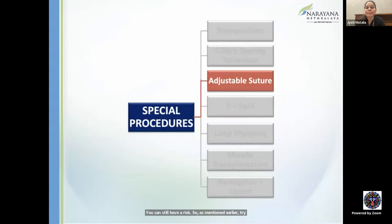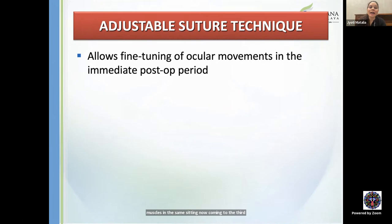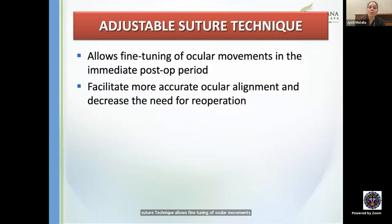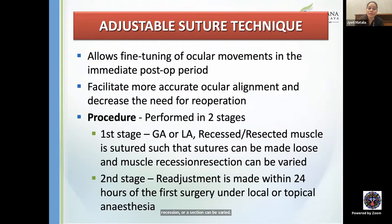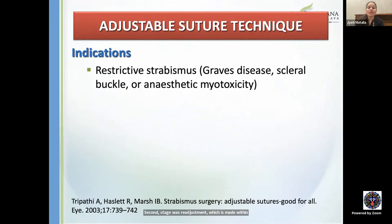Adjustable suture technique allows fine-tuning of ocular movements in the immediate post-operative period, facilitates more accurate alignment, and decreases re-operation rates. It is performed in two stages: the first stage under GA or LA where recession/resection sutures are placed in an adjustable fashion; the second stage readjustment within 24 hours under local or topical anesthesia. Indications include restrictive strabismus (Graves' disease, scleral buckle, anesthetic myotoxicity), cases with previous trauma or surgery, incomitant deviations (Duane's, Möbius syndrome, myasthenia, paralytic strabismus), complex long-standing strabismus, and cooperative patients.